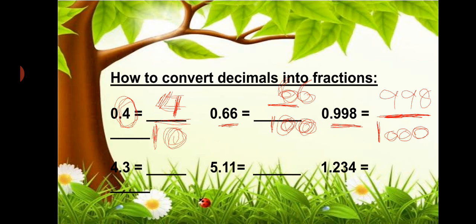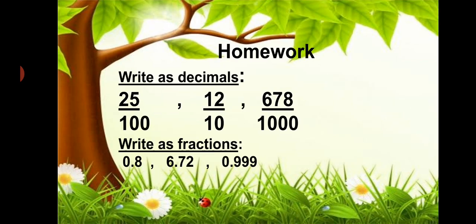This is your classwork and you have to do it in your online classwork copy. Now for your homework today: write as decimals — 25/100, 12/10, 678/1000. Next question: write as fractions — 0.8, 6.72, and 0.999.